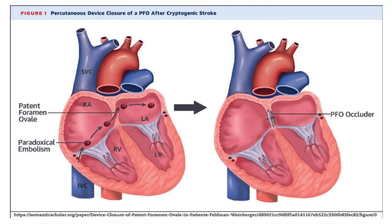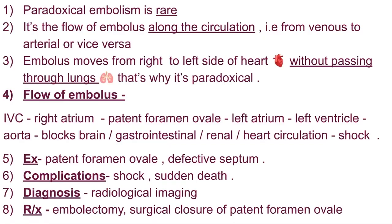In some other cases, from the left ventricle the embolus reaches the aorta, then it reaches the brain, where it causes obstruction. In severe cases, sudden death can also occur due to cryptogenic shock.